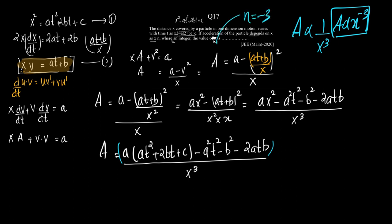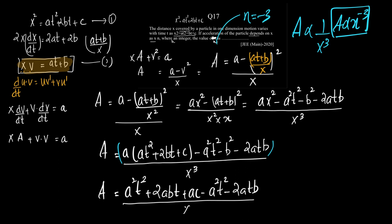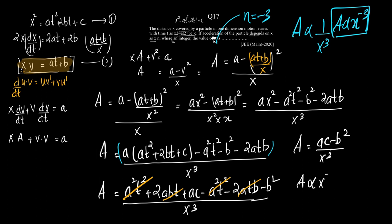Let me continue the rest to confirm. Expanding: a(at² + 2bt + c) − a²t² − 2abt − b², all over x³. The a²t² terms cancel, and the 2abt terms cancel, leaving A = (ac − b²) / x³. Therefore A is proportional to x raised to −3, confirming n = −3.